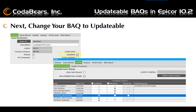Next, you will change your BAQ to an updatable BAQ. There are a few required steps. First, you need to check the updatable checkbox on the General tab for your query. Next, go to the Update tab and the General Properties tab to select if you will allow new records to be created or allow multiple rows to be updated before saving the update. In addition, on this tab you will be able to select which fields will be allowed to be updated.